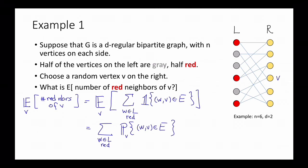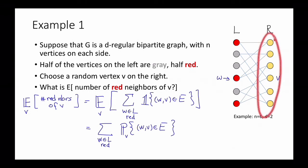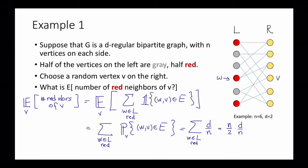What is this probability? We fix some W, and ask: when we pick a random vertex V on the right-hand side, what is the probability we pick a neighbor of W? W has D neighbors, and there are N possible vertices I could have picked, so this probability is D/N. The sum is then over N/2 red vertices in L (since half are red), each contributing D/N, giving (N/2)·(D/N) = D/2. So the expected number of red neighbors of V is exactly D/2. This gives a clean example of how to use linearity of expectation.